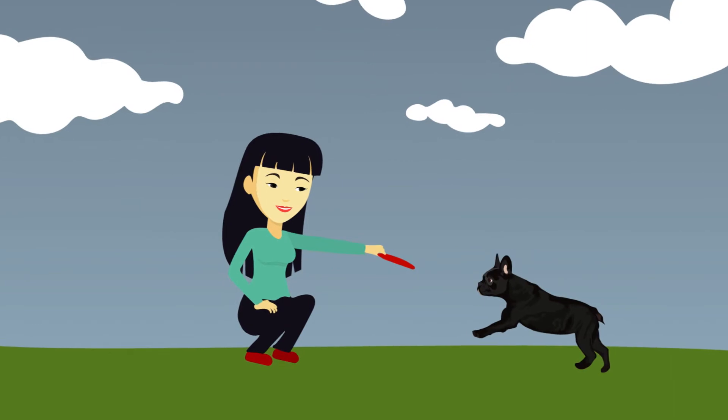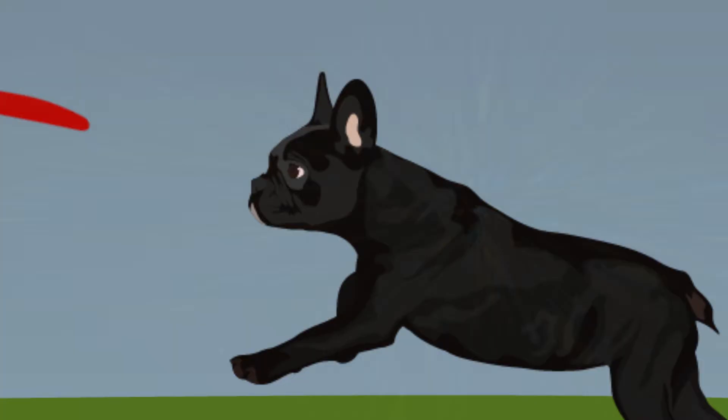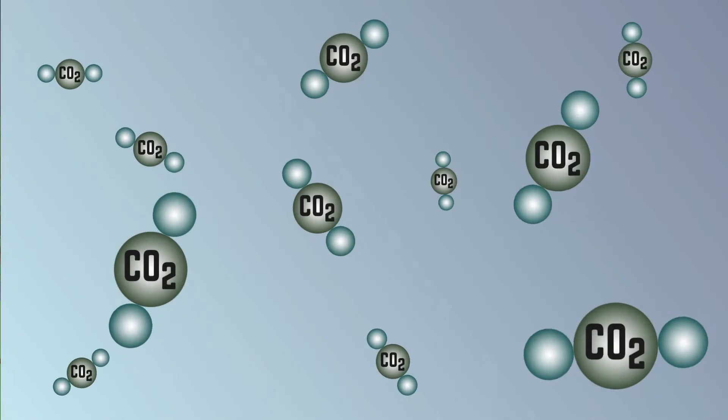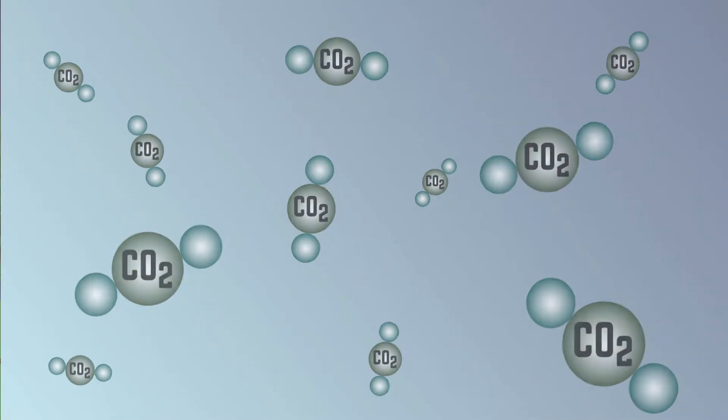When new life is formed, carbon forms key molecules like protein and DNA. It's also found in our atmosphere in the form of carbon dioxide, or CO2.